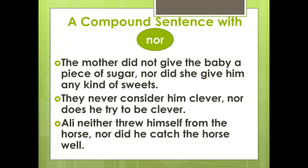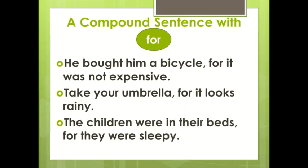He neither threw himself from the horse, nor did he catch the horse well. A compound sentence with FOR — FOR here means BECAUSE. He bought him a bicycle, for it was not expensive. Take your umbrella, for it looks rainy.